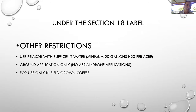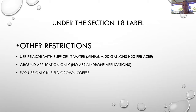Other restrictions: you're going to have to use Pryaxor with sufficient water — a minimum of 20 gallons per acre. Only ground application is allowed; no aerial and no drone applications. This product is only for use in field-grown coffee. If you have coffee in a nursery or for transplant, you cannot use Pryaxor there — only in your field-grown coffee.